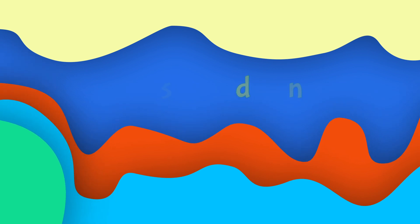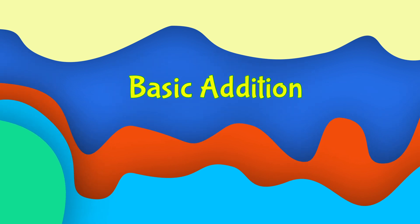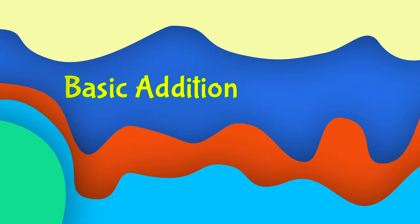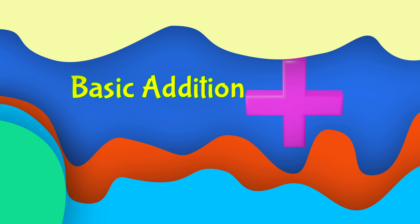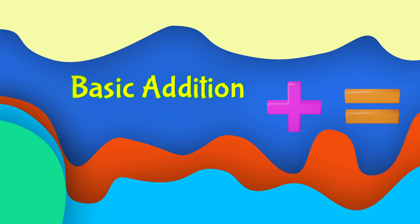Hi, now we learn about addition. Addition is adding the number of items to find the total number of items. This is the plus sign, used for addition. And this is the equal sign, meaning the result of a counting. Let's get started.